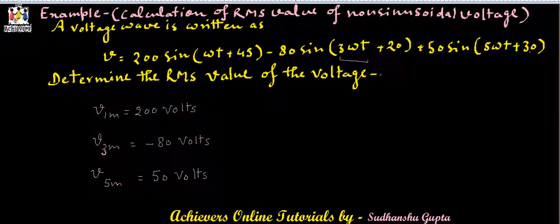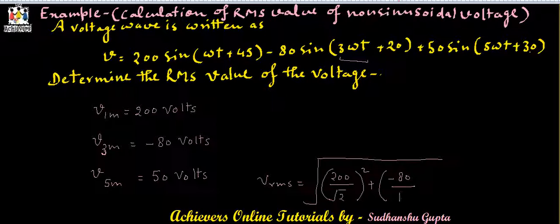Now, if we apply the formula for calculating the RMS value, we will have V RMS is equal to square root of 200 upon root 2 whole square plus minus 80 upon root 2 whole square plus 50 upon root 2 whole square.